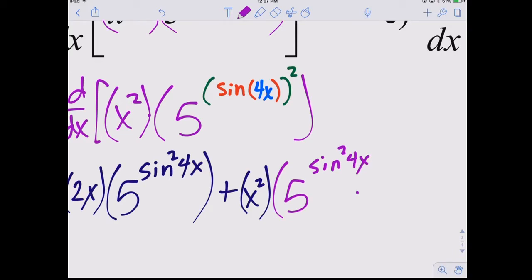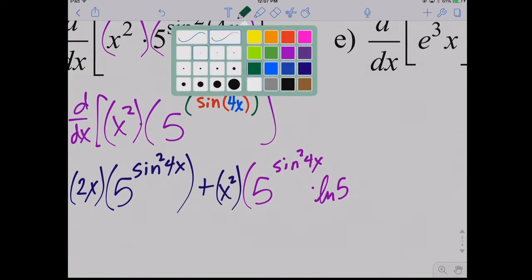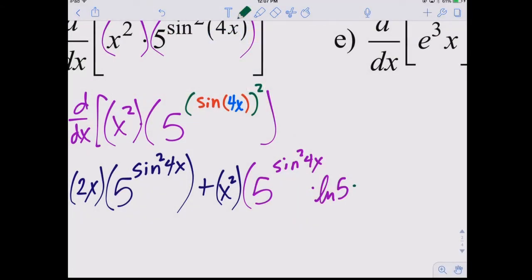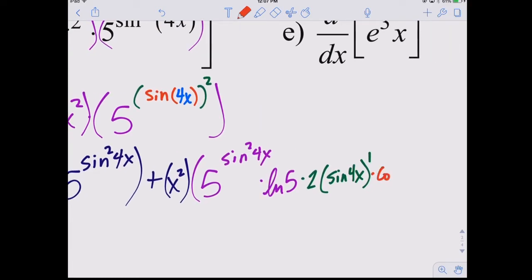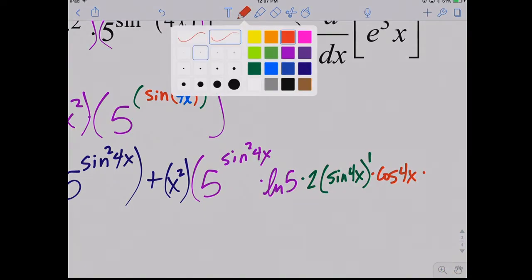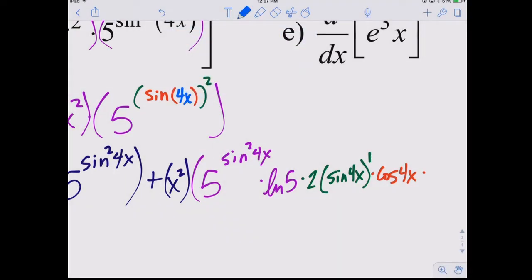Here we go. The derivative of 5 to the blob is 5 to the blob, times, because it's not base E, the natural log of the base. That takes care of the purple-nurple layer, times, now the next layer, blob squared. Blob squared becomes 2 blob to the first. Times the derivative of the next layer. What's the derivative of sine of blob? Cosine of blob. And notice, every time we do this, blobs get increasingly smaller. We're unpacking a giant box that has lots of other boxes in it. The derivative of the inside box, the innermost box, is 4. And now I can close my giant purple-nurple parentheses.